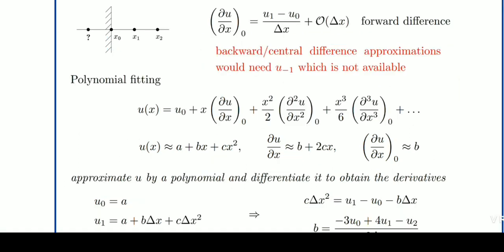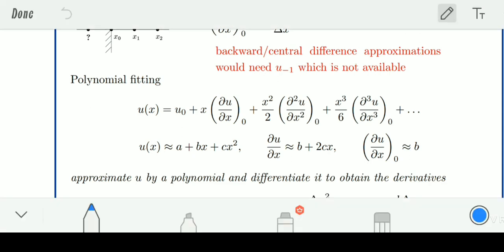Next, you can see the expansion of a Taylor series as U(X). We have used the Taylor series expansion here: X1 by 1 factorial and the first-order differentiation of the function, plus X squared by 2 factorial and the second-order differentiation, then X cubed by 3 factorial and the third-order differentiation. You can see that we have written 0, 0, and 0 because we are finding the value of the function at X naught.